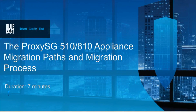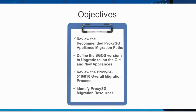The ProxySG 510/810 Appliance Migration Paths and Migration Process. If you will be migrating to a new Bluecoat ProxySG OS and appliance, you may have a number of questions. During this brief training, you will review the recommended appliance migration paths, define the SGOS versions to upgrade to on the old and new appliances, review the ProxySG 510/810 overall migration process, and identify migration resources.